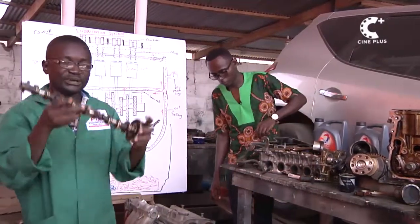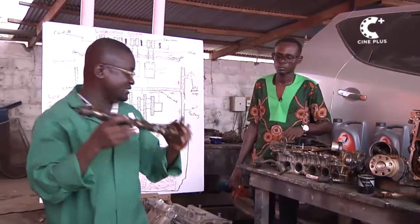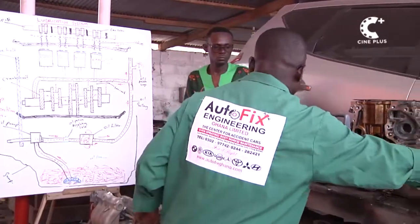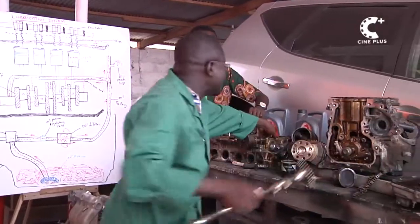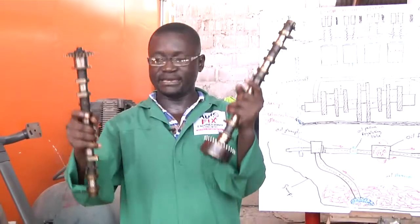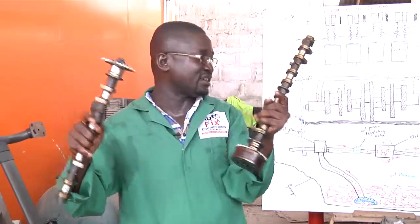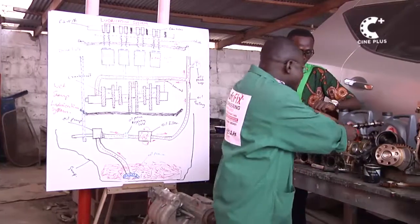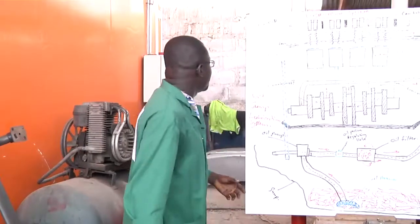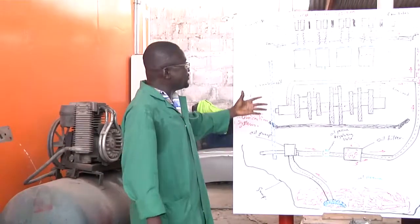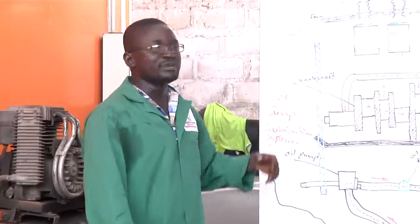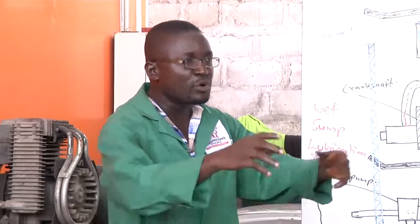We can actually use the camshafts. We can use the camshafts, the tube, the air, and the washafts. So these are the two camshafts. The lubricating system is used as the component.